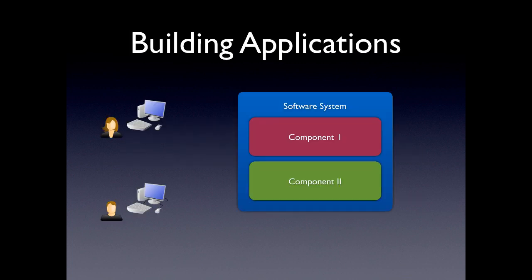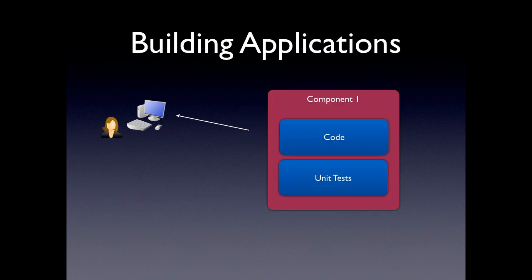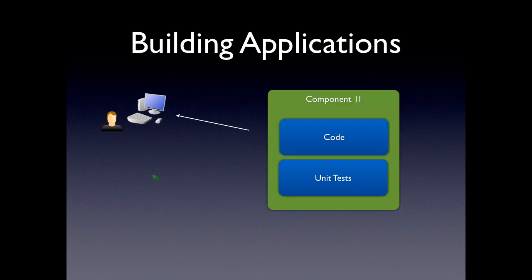So what exactly does this mean? Well, let's take a look at a typical scenario when we're building applications. Often we're faced with a software system that's composed of different components. We have one person working on component 1, and another person working on component 2. Each of these people in isolation have the code and the unit tests, and everything normally works out great. They write their code, run their unit tests, and it's all fine.